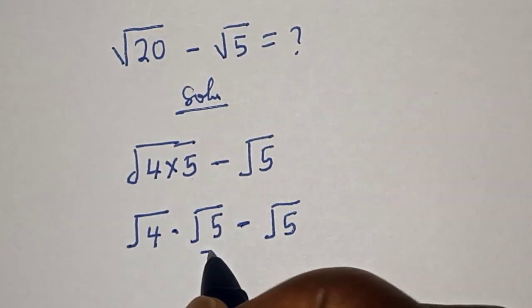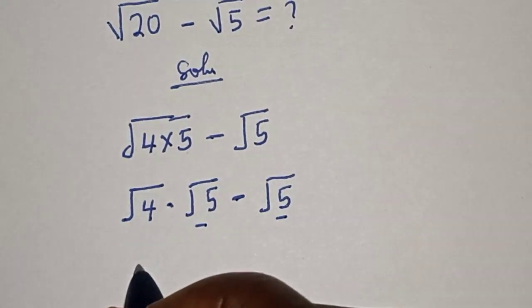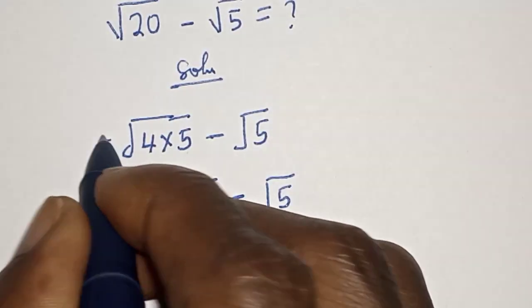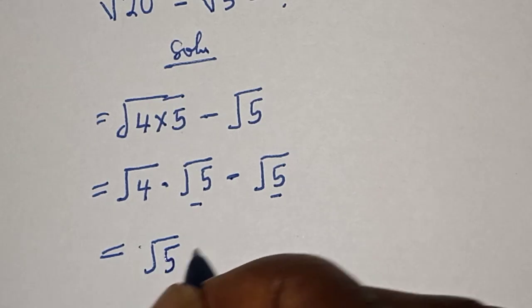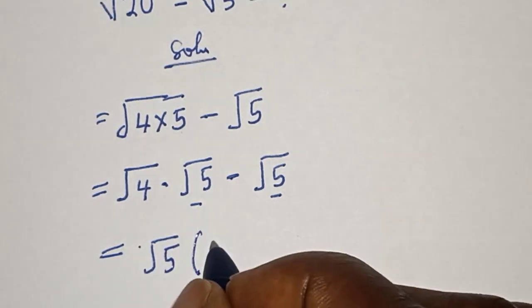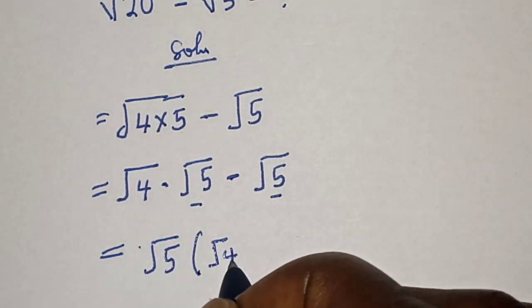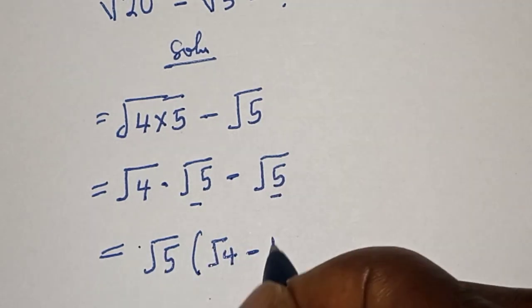Then, what square root of 5 is common? Let's bring it out. We have square root of 5 bracket square root of 4 minus 1.